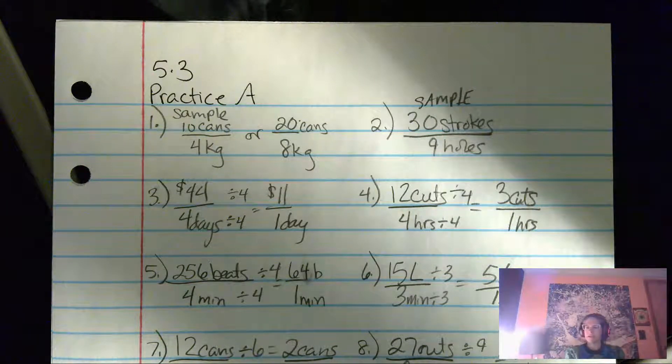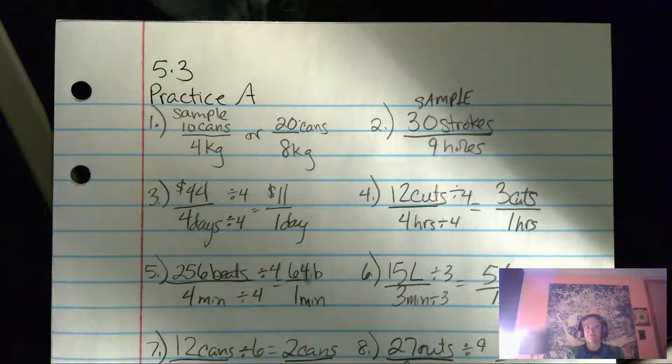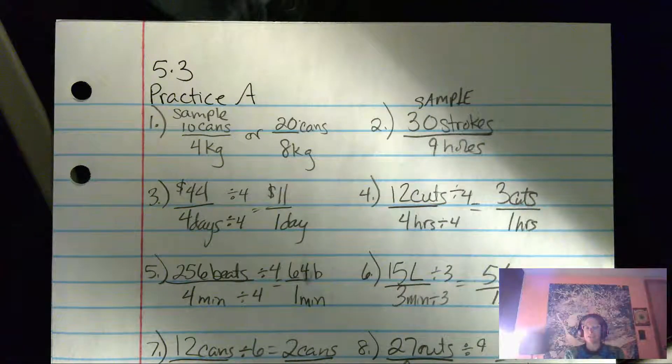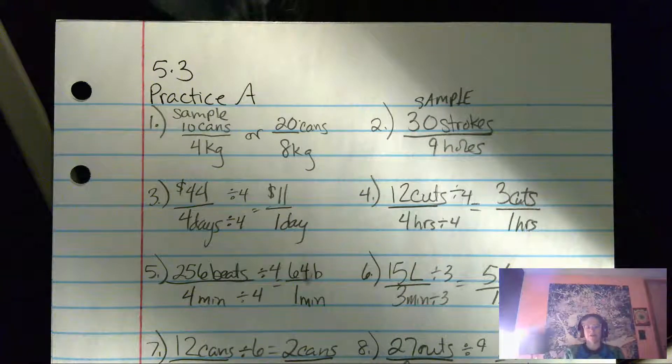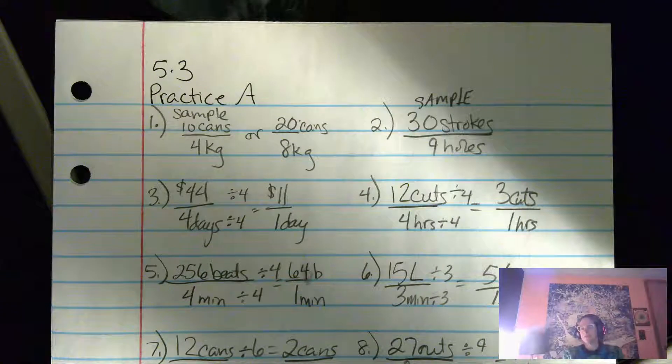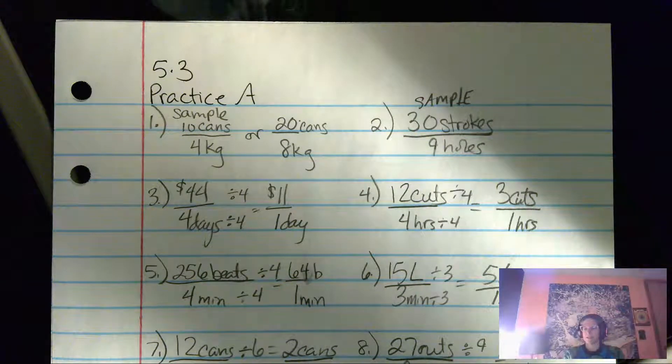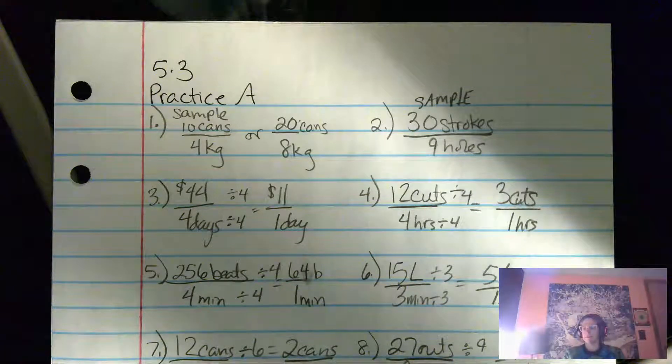Number one, I just put down a couple of answers. It could be 10 cans for every four kilograms or 20 cans for every eight kilograms. You can see how it changed on the graph or the double number line diagram. Number two, I just wrote down 30 strokes per hole as long as your answer shows up on that double number line in that same pattern. You should be good.